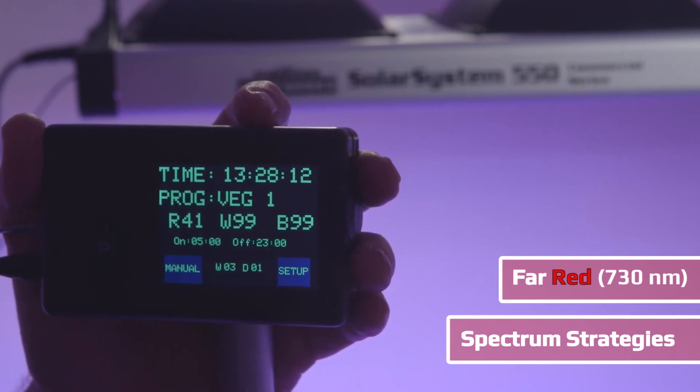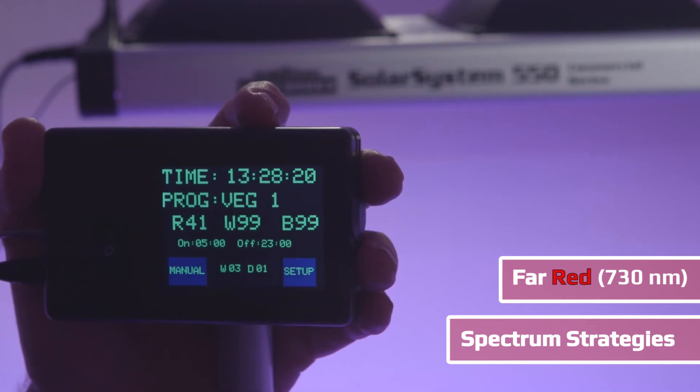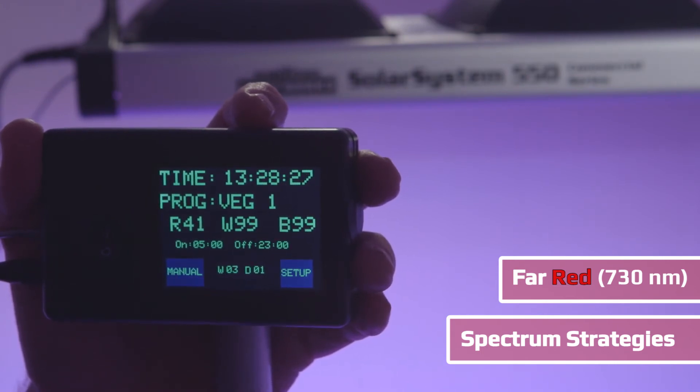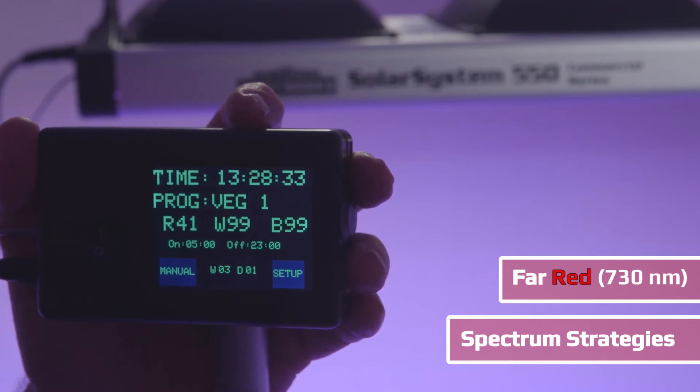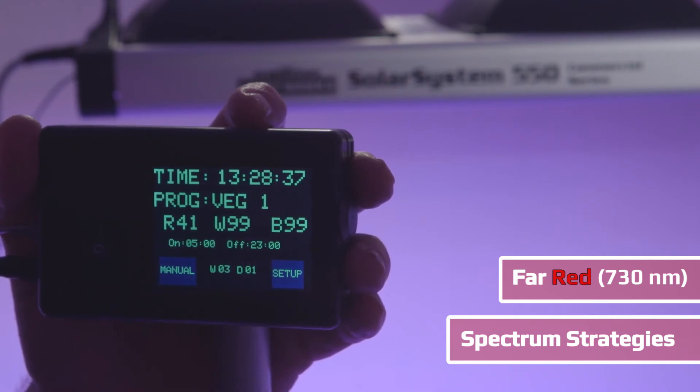However, 730 nanometer far red controls the plant's switching from daytime to nighttime mode. It measures the ratio of deep red (660 nanometers, included in most grow lights) to far red (730 nanometers). When the ratio of far red is more than deep red, the plant triggers its nighttime mode.